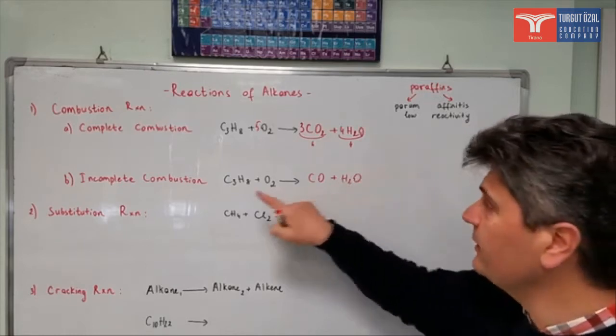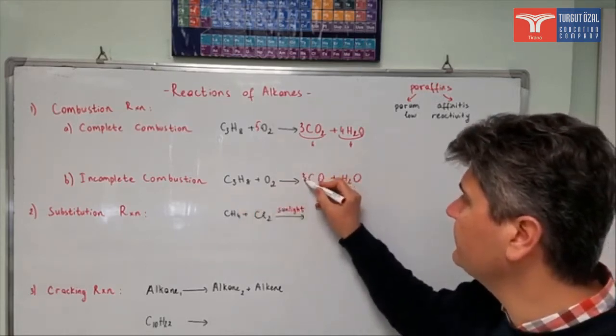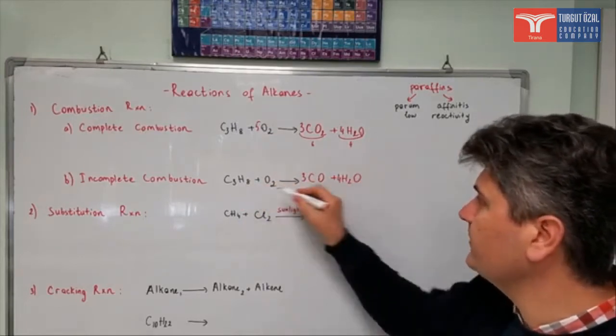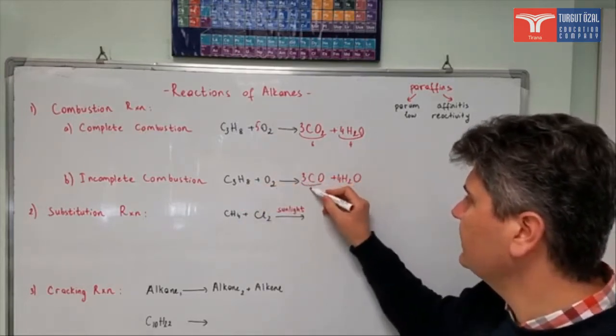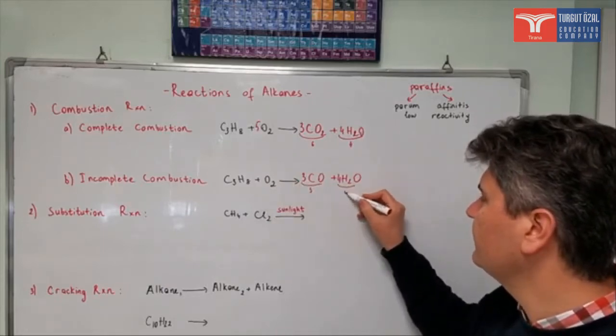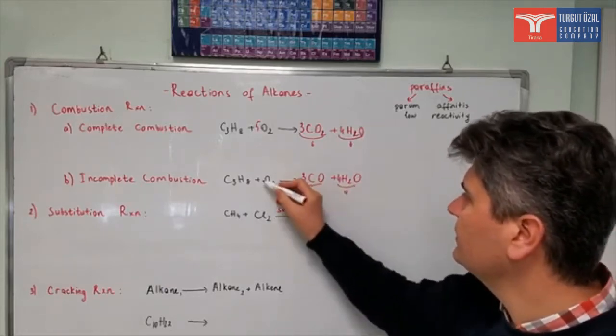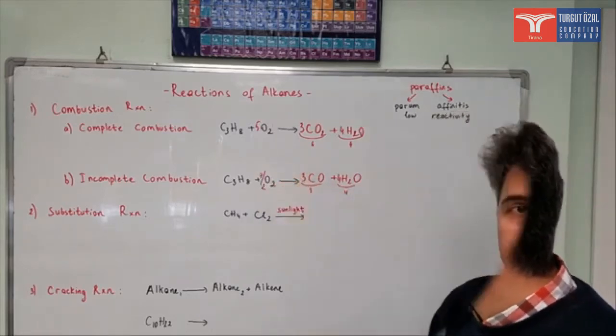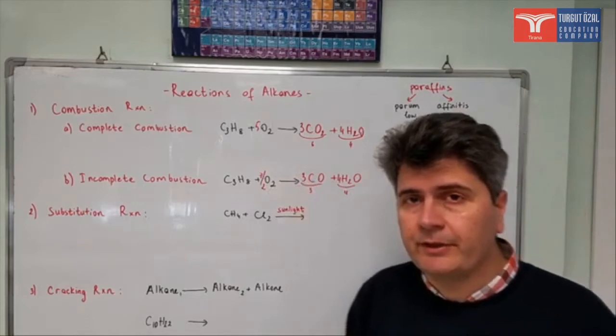Let's balance it again. Three carbon, so I write here three. Eight hydrogens, so I write here four. Four times two is eight again. Then oxygens, I have three oxygens in here, four oxygens in here. So in total it is seven, so I write here seven over two. Second reaction is substitution reaction.